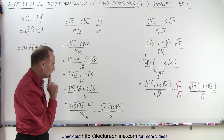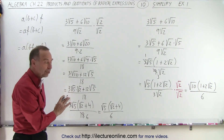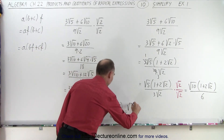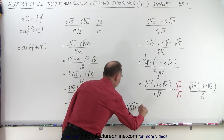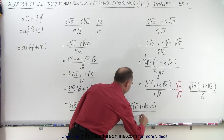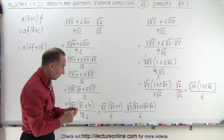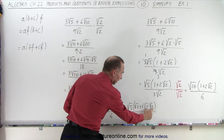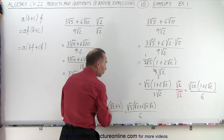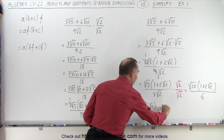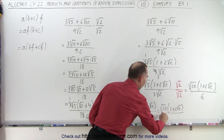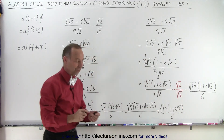You might realize it doesn't look like the same thing as before — but actually it is the same, just in a slightly different format. We can rewrite this as the square root of 5 times (the square root of 2 plus 2 times the square root of 2 times the square root of 2) all divided by 6. Those last two square roots of 2 multiplied together give 4 again. Now factoring out the square root of 2, this becomes the square root of 10 times (1 plus 2 times the square root of 2) all divided by 6, which is exactly the same as what we got before.